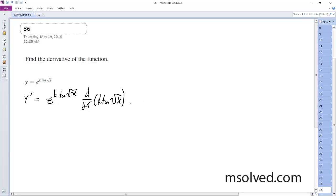And then we end up going with the product rule here. So we get, in this case, k times the secant squared of the square root of x times one half x raised to the negative one half.